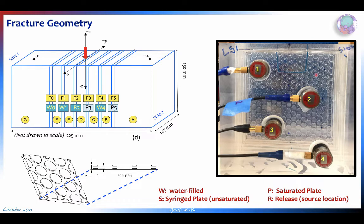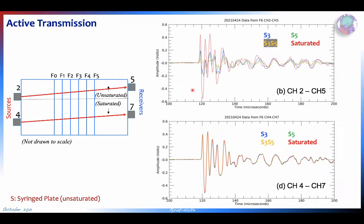Here's an example in a photograph where it's partially saturated in one region and fully saturated in another. Where it's partially saturated there is coupling because of the menisci held against each of these little discs.